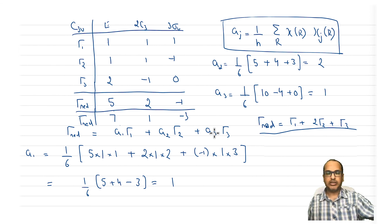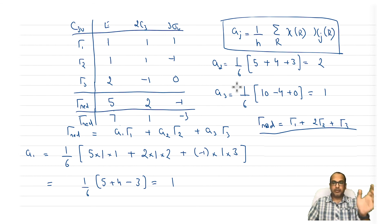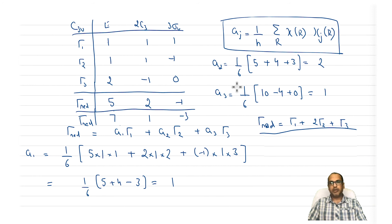That is all for this lecture. We have learned how to write a reducible representation and how to convert it into a linear combination of irreducible representations entirely using GOT. This concludes the Great Orthogonality Theorem discussion. In the next class, we will discuss the character table in detail — its different portions, what it is constituted by, its important regions, and how basis sets are identified.